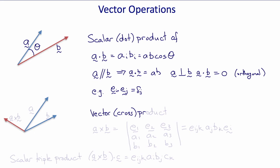Now let's look at the vector or cross product between two vectors a and b. The result is a vector that's normal to the plane of a and b.